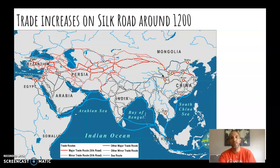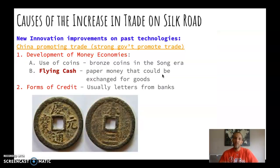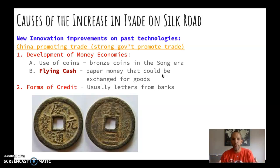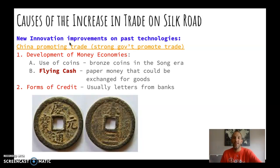The Silk Road gets its name because China produces silk and for a while had a monopoly on silk and silkworms — but that's another story. Around circa 1200 there's going to be an increase in trade along the Silk Road for a whole bunch of reasons. One thing to start with is there are a whole bunch of new innovations — just inventions — new things that are going to happen and improve on past technologies in China.